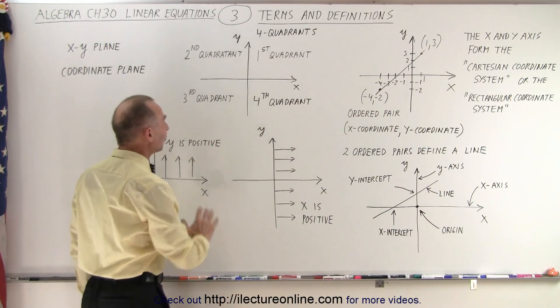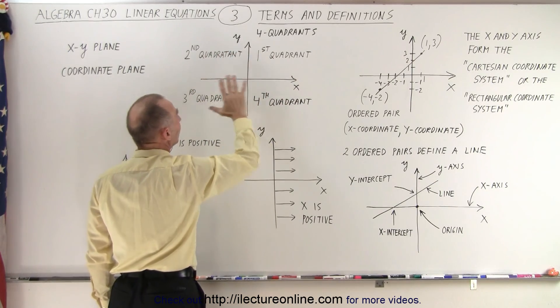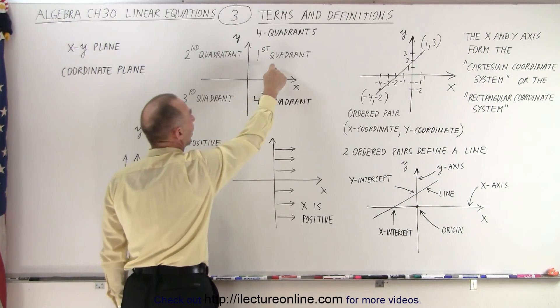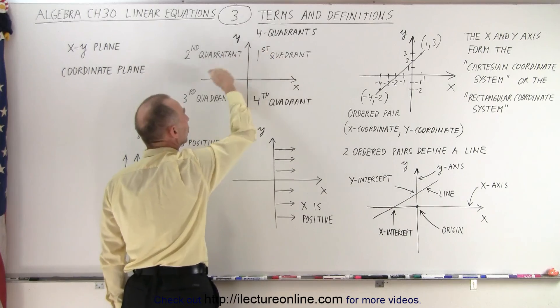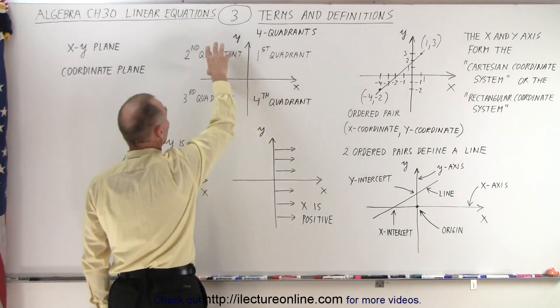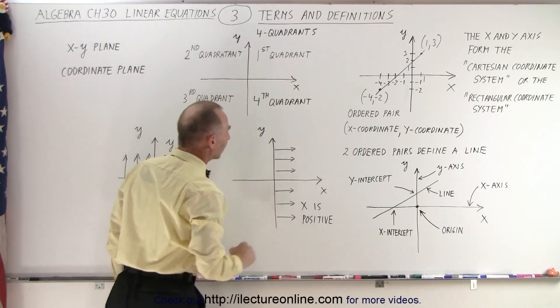Now also notice that if we look at the Cartesian coordinate system, we divide the plane into four quadrants. And we take the upper right quadrant and we call that the first quadrant. Now we go around the coordinate system in a counterclockwise motion. Then here we come up to the second quadrant, the third quadrant, and the fourth quadrant.